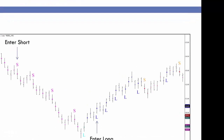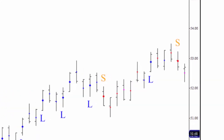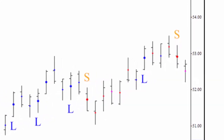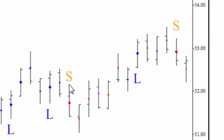Later, a warning long signal forms at the bottom of the move with the light blue or cyan colored L. A pullback to the downside takes place that holds the previous swing low, and upon the confirmed first class long signal — the darker blue L — that's where a trader would get long. This is also a good example of why we don't take warning signals alone: the market proceeded to rise, had a small down move with a warning short, but then continued rising to new highs. A trader who took that short would have lost money and likely been stopped out.